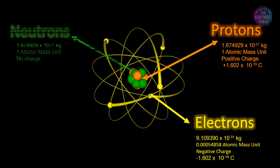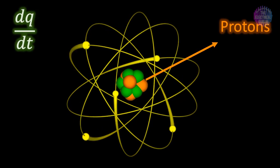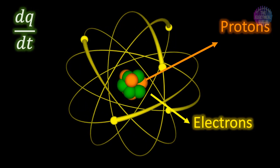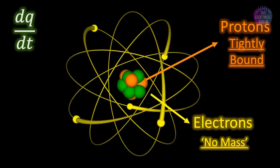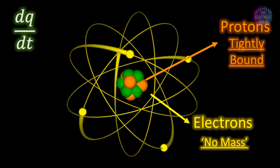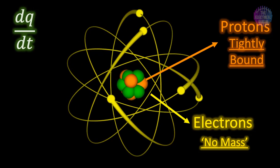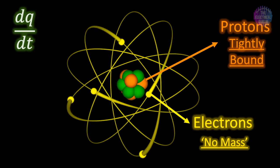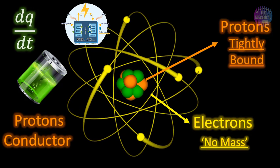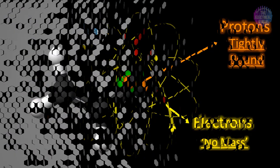As neutrons don't possess charge, let's keep them aside from the discussion. Current is the flow of charges. Electrons and protons are both charged particles, but as electrons have low mass and are weakly bounded and far from the nucleus, it is easy to add or remove electrons. Hence in most cases, electron flow produces current. Protons are close to the nucleus and tightly bounded, making it very difficult to remove or add any proton. So mostly protons don't move. However, in some phenomena like fuel cells, special batteries, or proton conductors, protons also move and produce current.